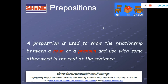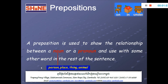A preposition is used to show the relationship between a noun or a pronoun, and used with some other words in the rest of the sentence. As you already know about nouns — nouns tell you about a person, place, thing, and animal.